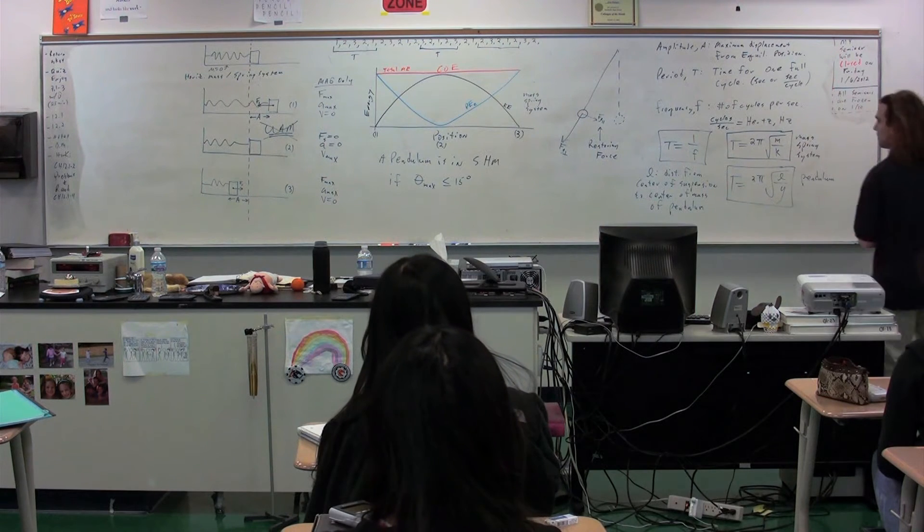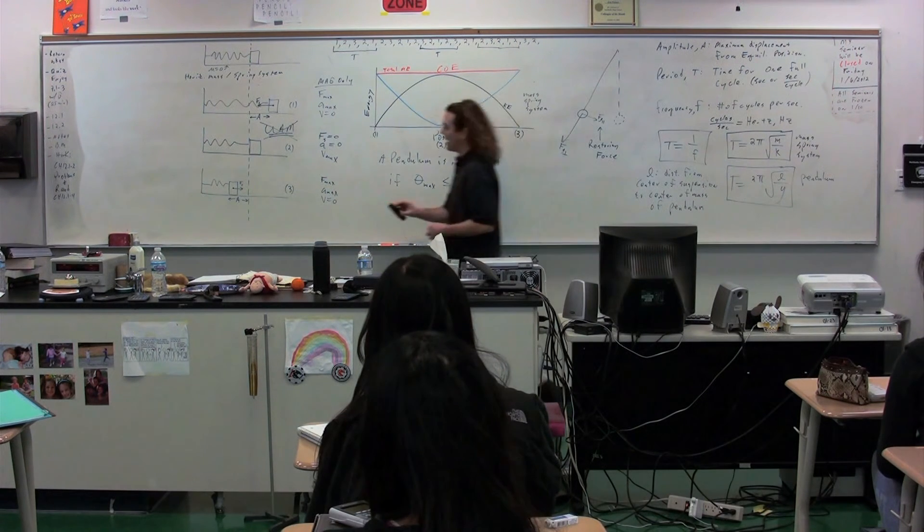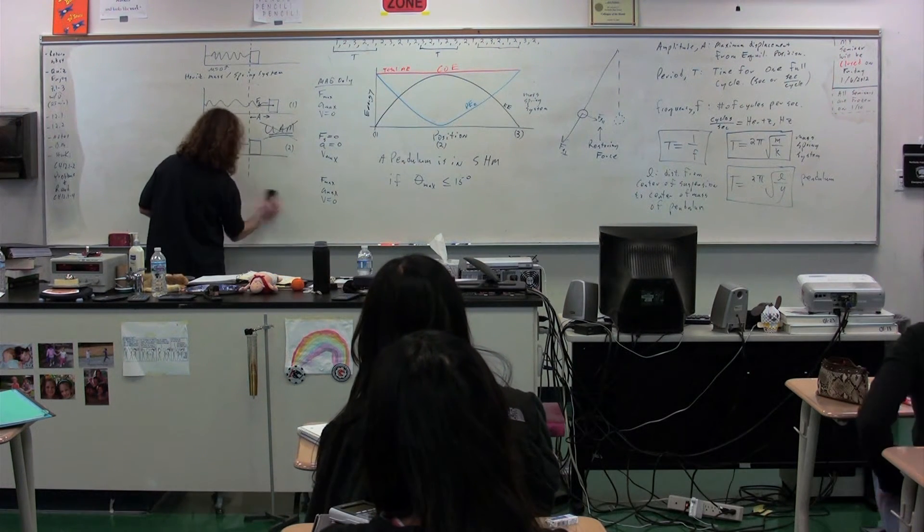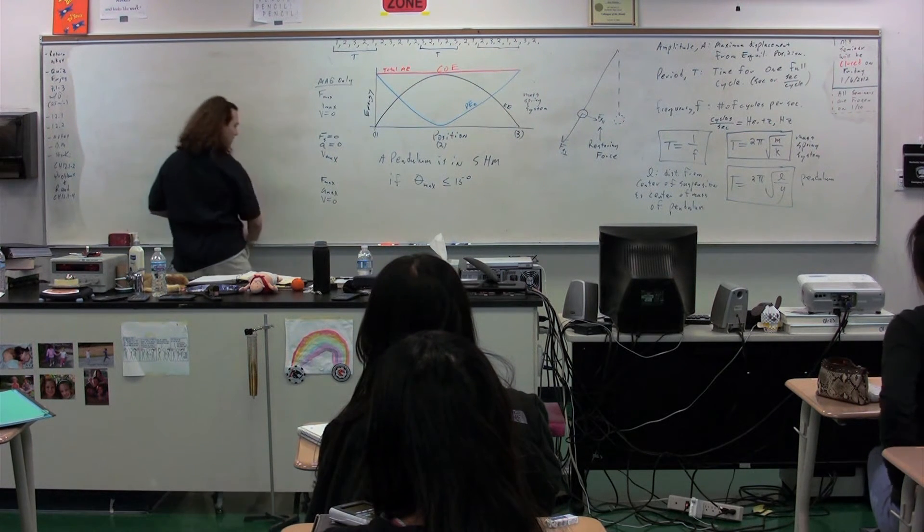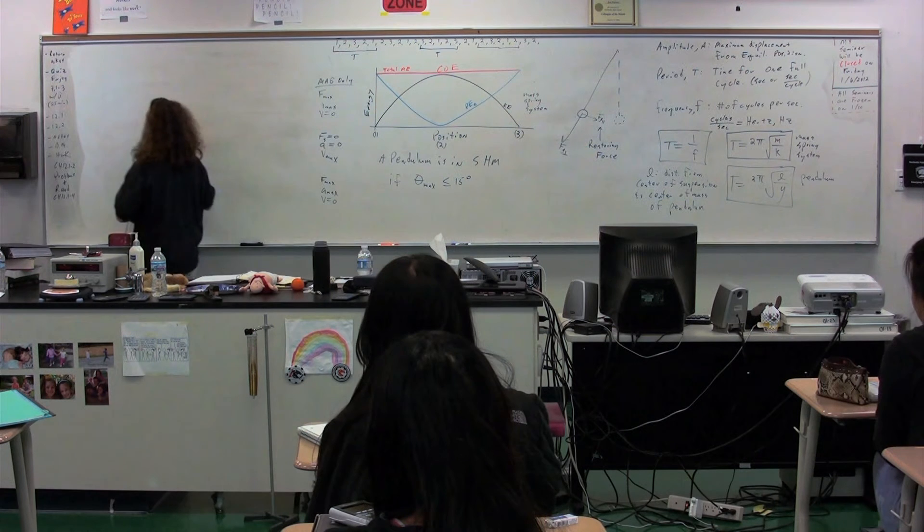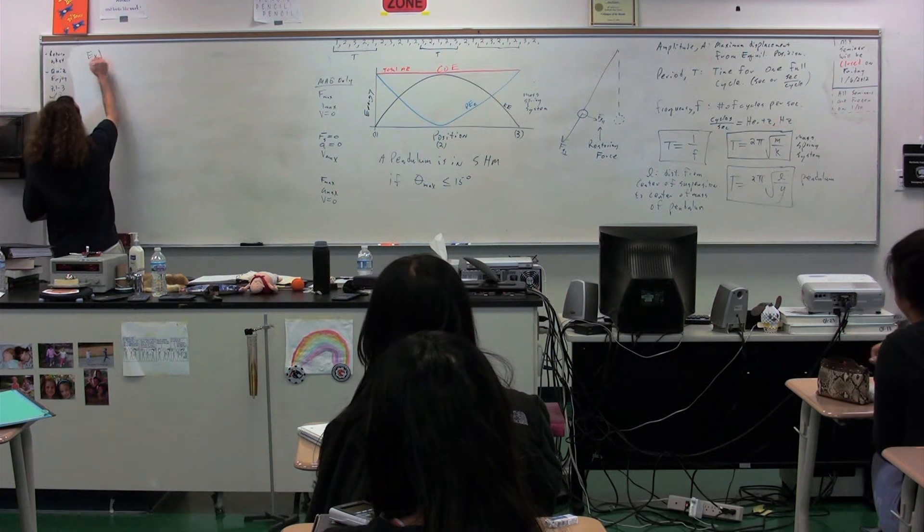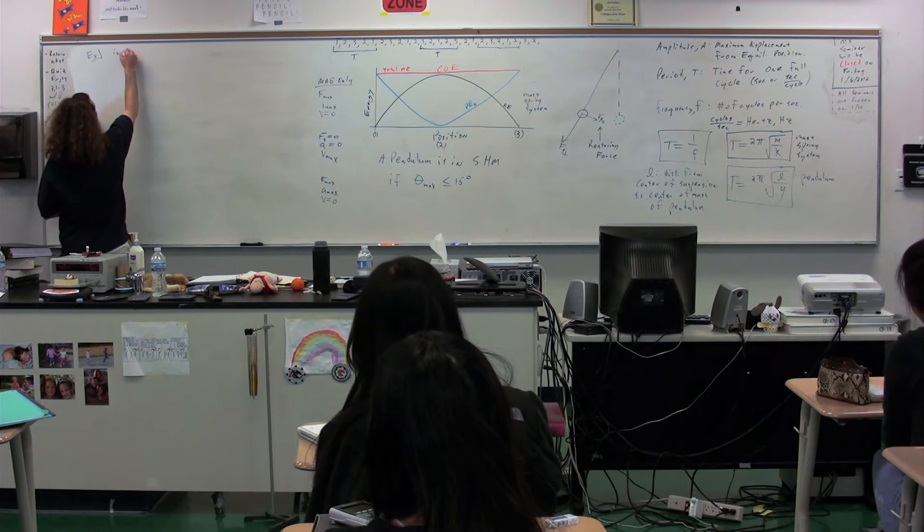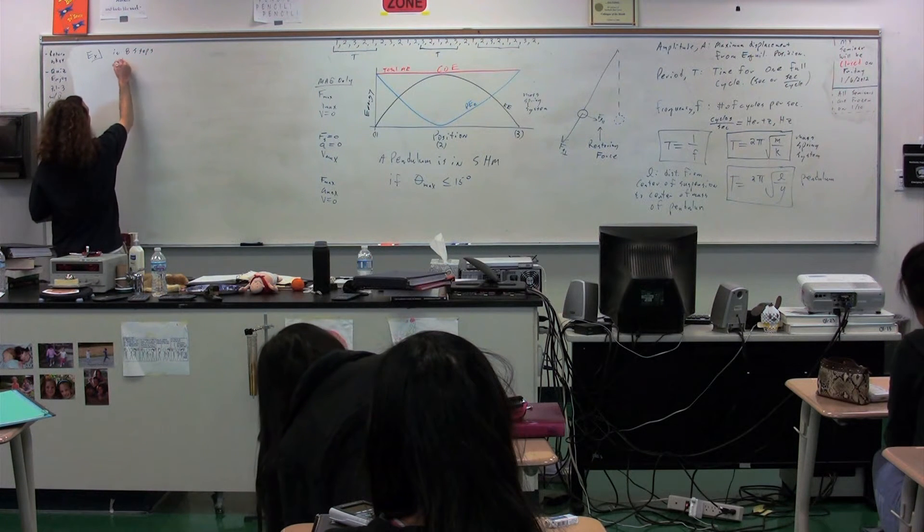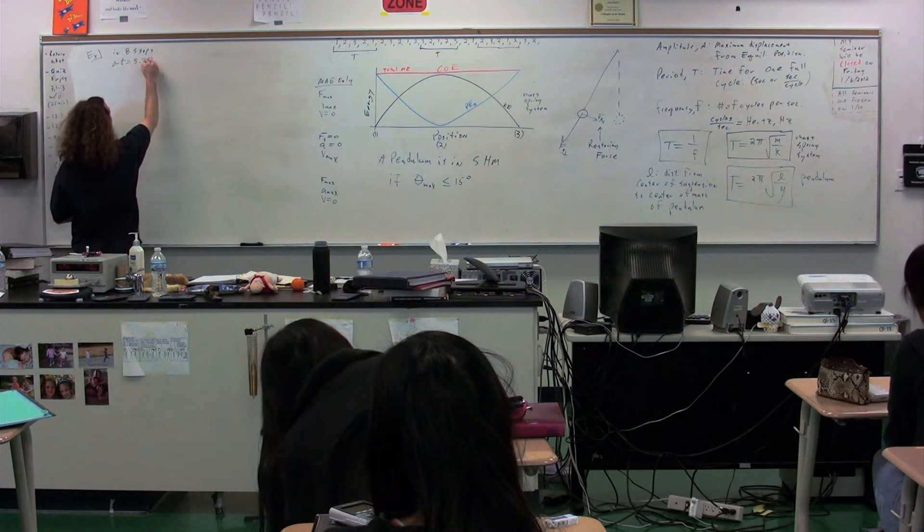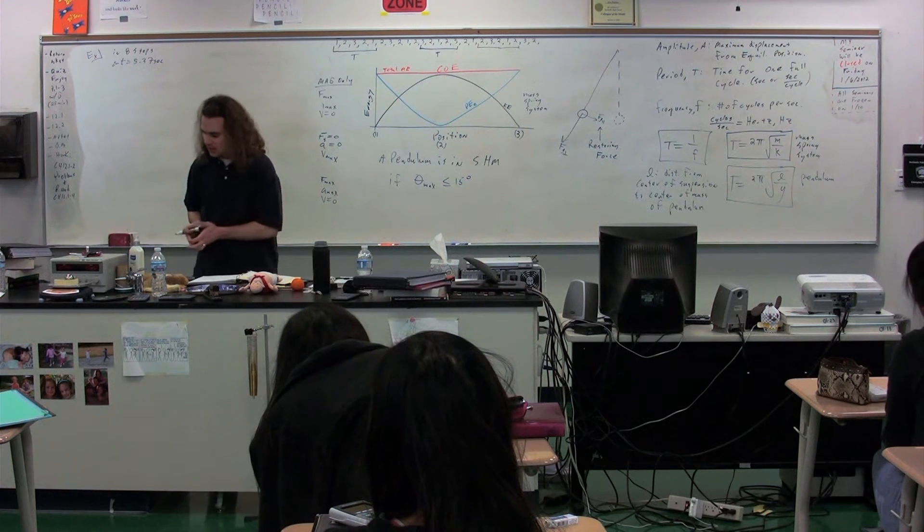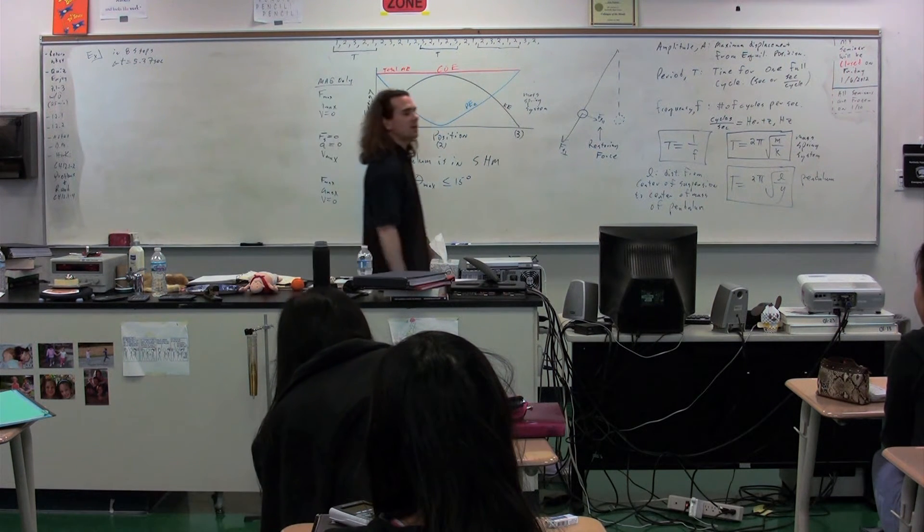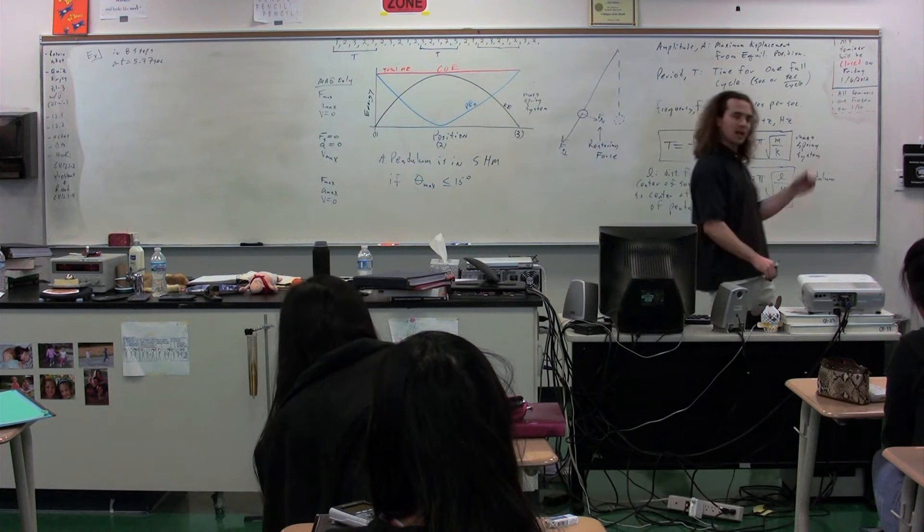From here, we can figure out where the center of mass of my leg is. So, in eight steps, I took 5.37 seconds. Okay. In eight steps, how many cycles did I go through?